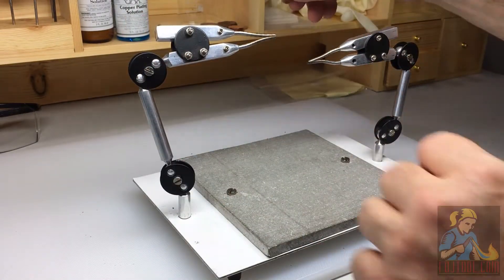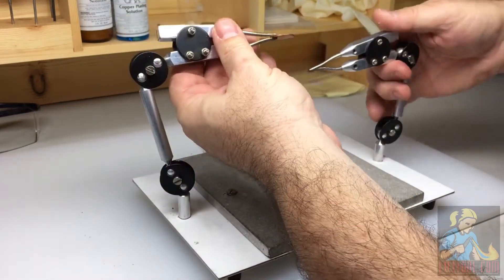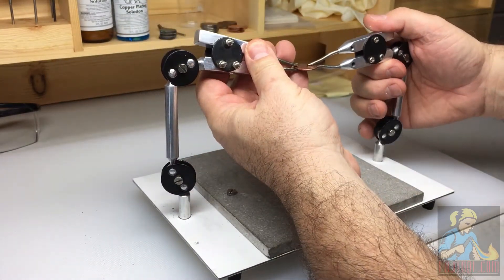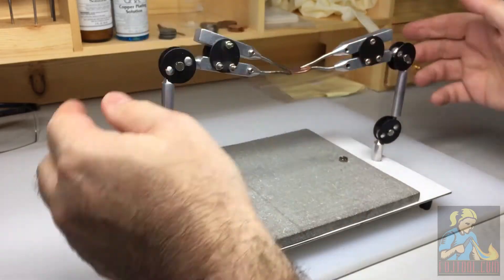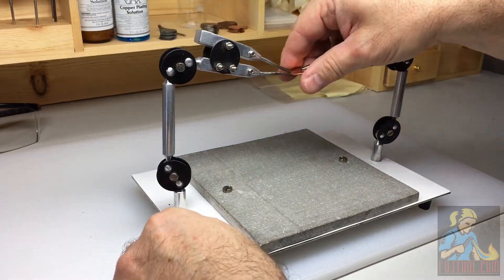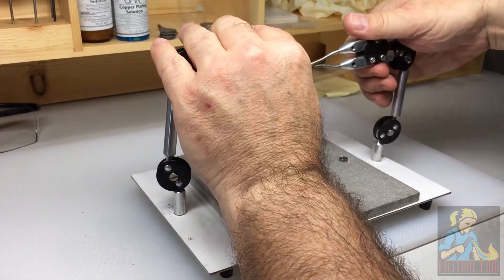When you're soldering and you need to position something and just don't have that third hand on you to help you position things in the right way, that's where this tool comes in because both of these jaws are going to help you do just that.